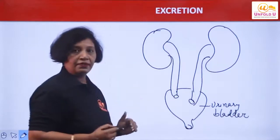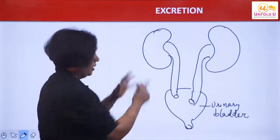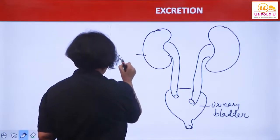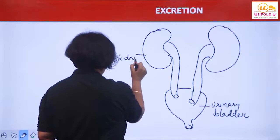Now, let us label the different parts of the human excretory system. I have drawn the human excretory system. These are kidneys. We have a pair of kidneys.